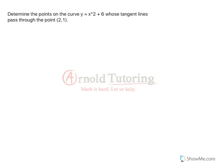Okay, here we've got a tricky Calculus 1 question. It seems pretty straightforward when we first read it. We've seen lots of equations of tangent lines and tangent lines passing through certain points. But what's interesting about this one is it says find the points on the curve y equals x squared plus 6 whose tangent lines pass through the point (2, 1).